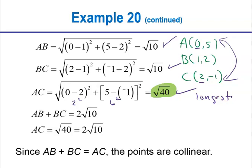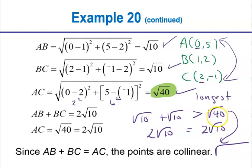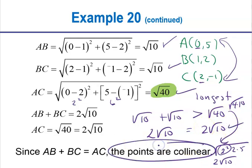So AB = √10, BC = √10. Square root of 10 plus square root of 10 is 2√10. Is the square root of 40 also equal to 2√10? Using prime factorization: 40 = 2² × 2 × 5, so √40 = 2√10. Or: √(4×10) = 2√10. Either way, they're equal. If AB + BC equals AC — they're equal and not strictly greater — that means the points are collinear. They lie on a line. If the inequality had been true with the sum being bigger, it would be a triangle.